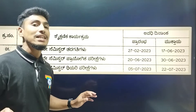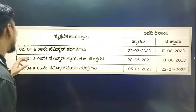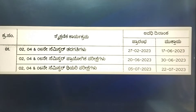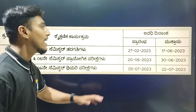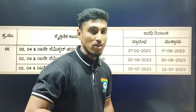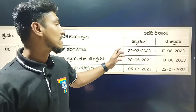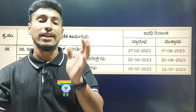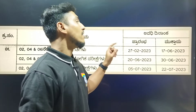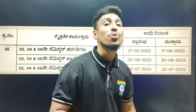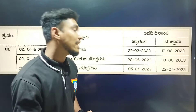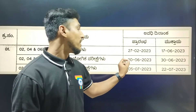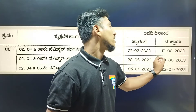Regarding the Diploma Examination dates: for the first time, the 2nd, 4th, and 6th semester academic year will start on the 27th of February 2023 and end on the 17th of June 2023. The practical exams are scheduled from 20th of June to 30th of June.